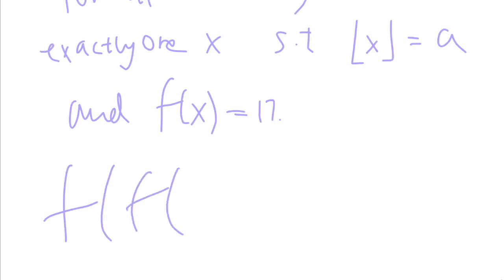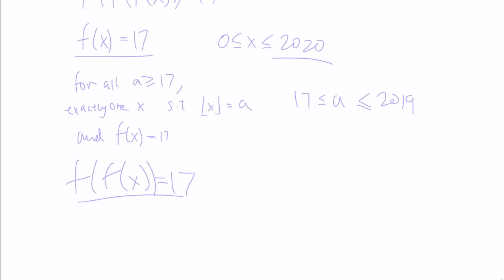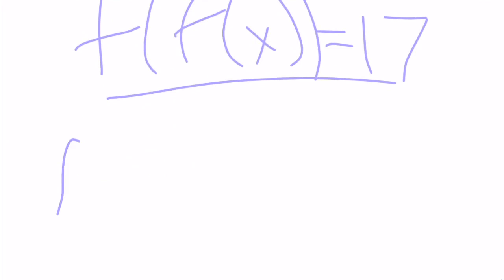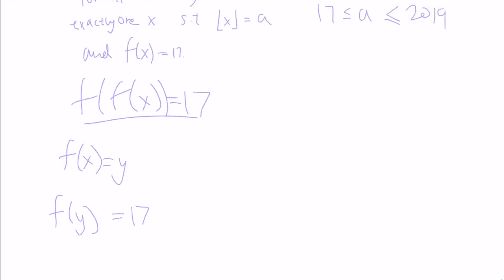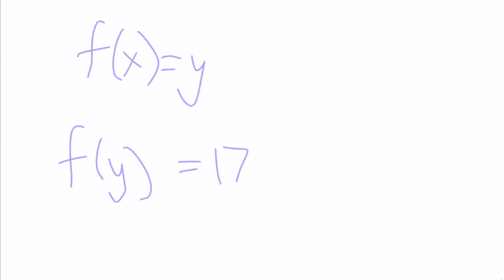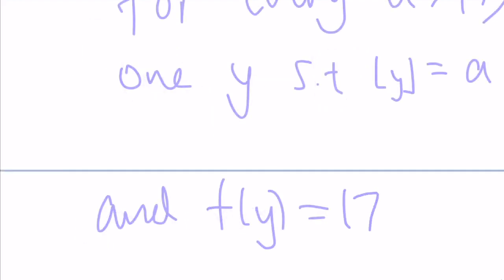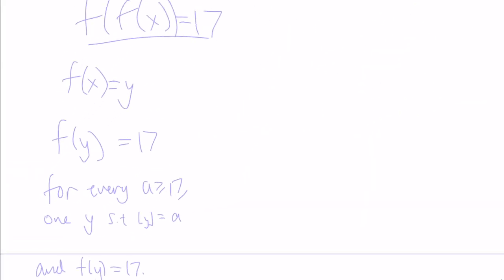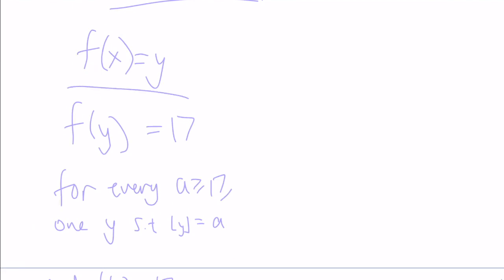Let's see if we can extend our argument to when there are two nested f's. We already know that in the first case there is exactly one x such that floor(x) = a, for any a ≥ 17, such that f(x) = 17. So what if we let f(x) = y? Then we're asked to find the number of solutions to f(y) = 17. The only difference from the last case is that now we have the additional condition that f(x) = y.